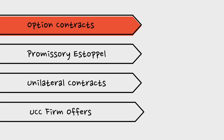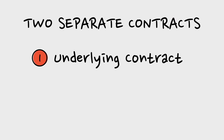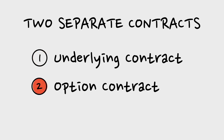Let's start with option contracts, which will take the longest. When we think about an option contract, it's helpful to think of it as two separate contracts. There is first an underlying contract for which the offeror has made an offer, and then a separate ancillary contract we call the option contract. Although I'm referring to it as an underlying contract, at this stage it's really only an offer to create that underlying contract.